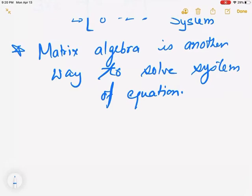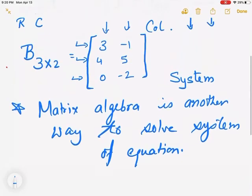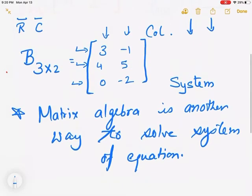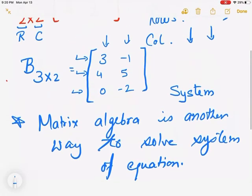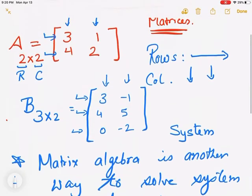Basically, it's going to be the simplest way to solve those equations. So we started off with dimensions — rows and columns. Keep in mind, the first number is always going to be for rows and the second one always for columns.